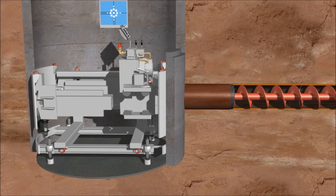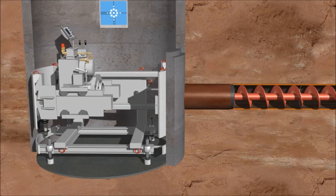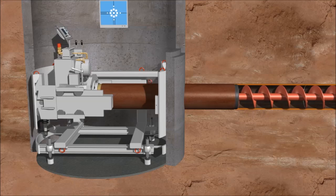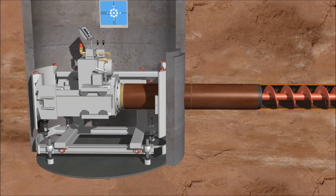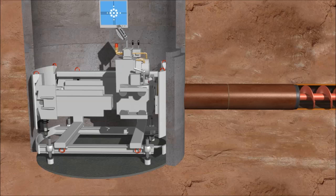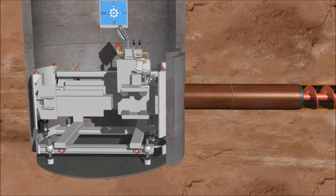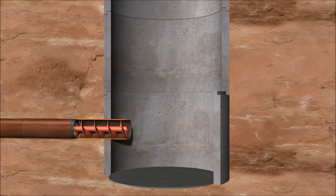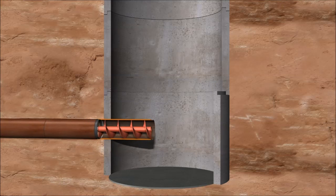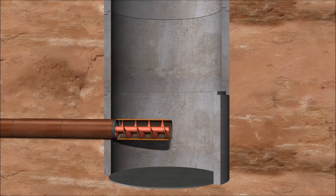During this operation the jacking force only has to overcome the skin friction. As the product pipes are jacked into place, the augers and casing are disconnected and lifted out. When the last casing reaches the reception shaft, the jacking procedure is completed.